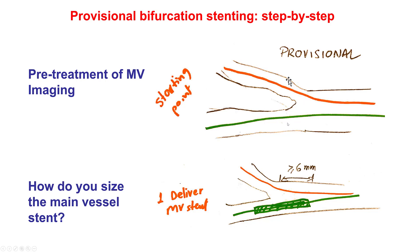We pre-treat the main vessel if needed. We often do intravascular imaging to determine the need for aggressive balloon dilation or other things like atherectomy. And once the lesion is prepared, then we insert a stent. Choosing the size of the stent is very important and has to do first with the diameter of the distal main vessel. The stent should always be sized in terms of diameter based on the diameter of the distal main vessel.